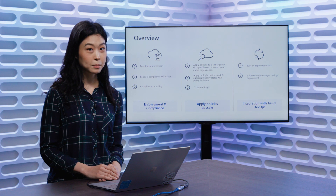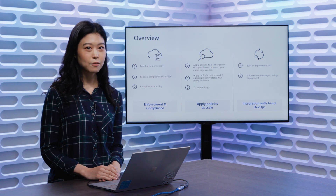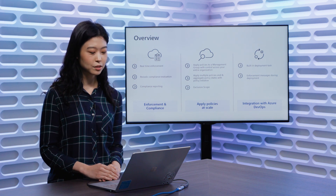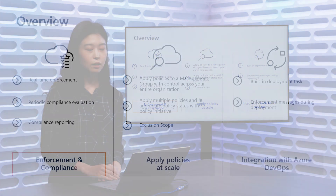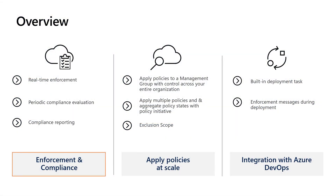There are three main capabilities in the functionalities of this feature. The first is around real-time enforcement and compliance assessment. When a developer tries to create a non-compliant object — whether that be pods, ingress, or namespaces — we are able to deny the creation before it even takes place.